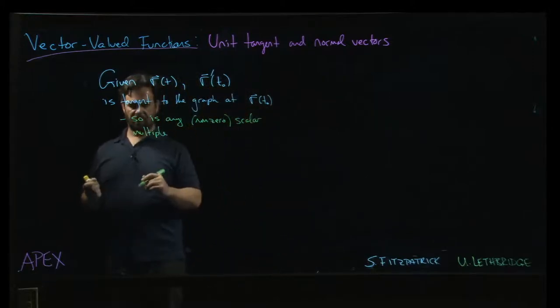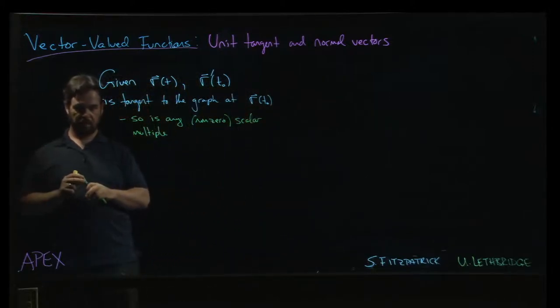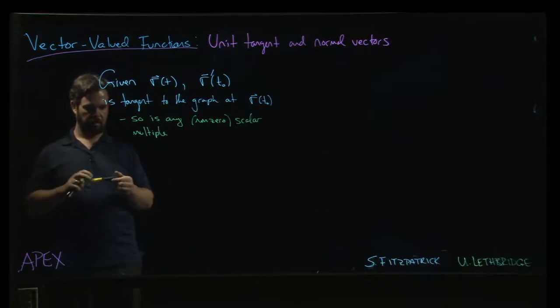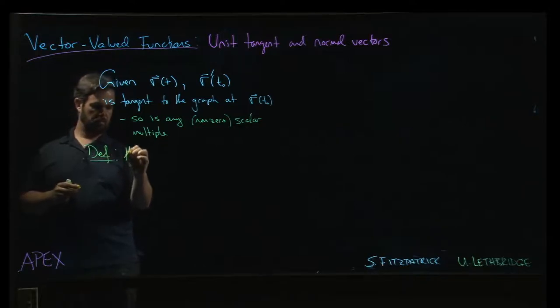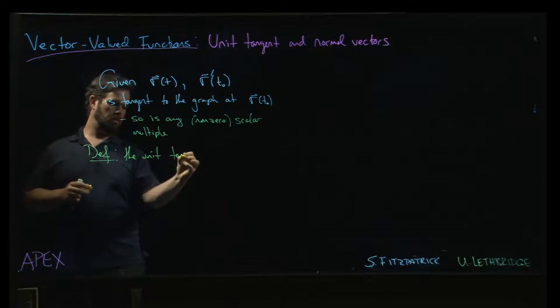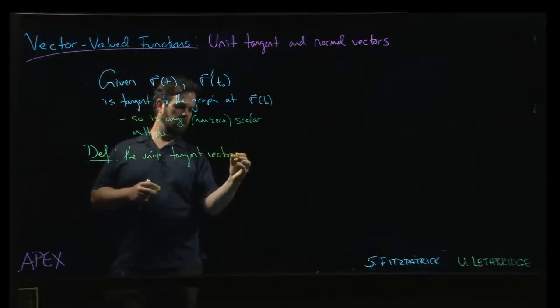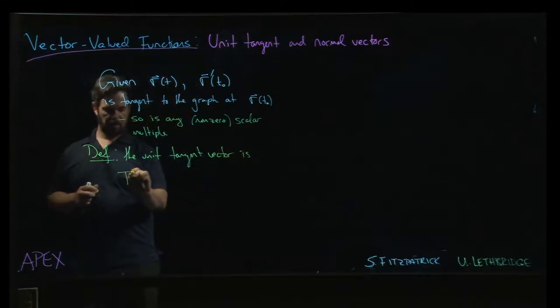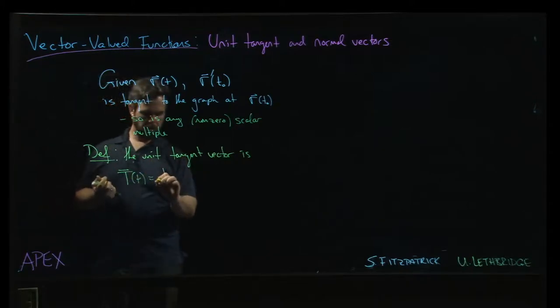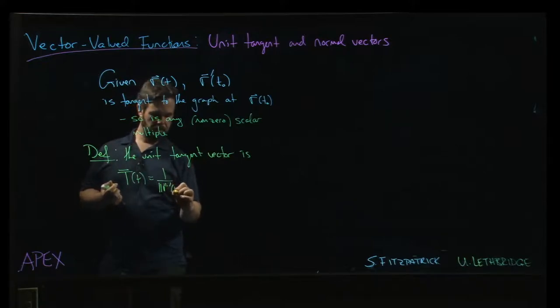well then it makes sense to define the unit tangent vector. So the unit tangent vector, well that's given by, so we use capital T for it. And it's, as you would expect, 1 over the magnitude of r prime times r prime of t.